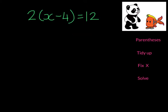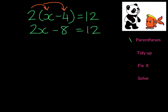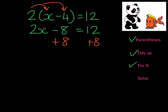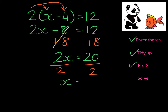Here's our first example, and we can see that we have parentheses. So we're going to have to distribute and multiply 2 times X and 2 times negative 4. 2 times X gives me 2X, and 2 times negative 4 gives me negative 8. So we've distributed and gotten rid of the parentheses. This is pretty tidy — I just have a variable, a number, the equal sign, and a number. We don't have to fix X because there are no X's on both sides. So our first inverse operation is to add 8 to both sides, giving us 2X equals 20. Then we divide by 2, so X equals 10.